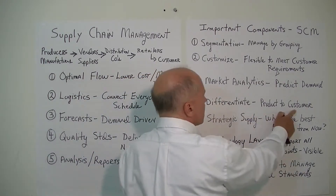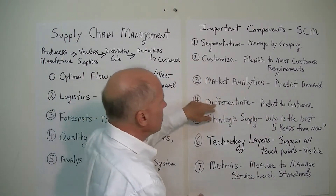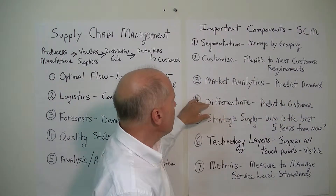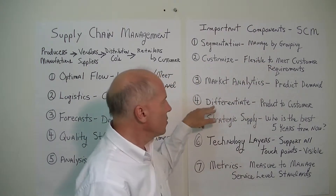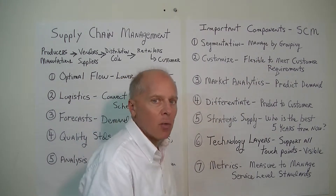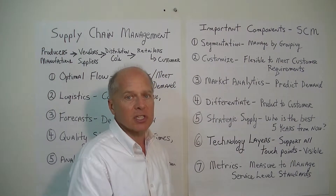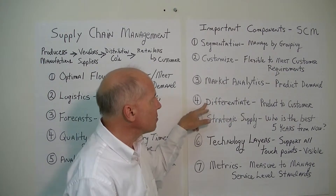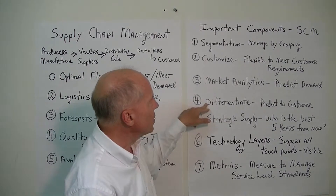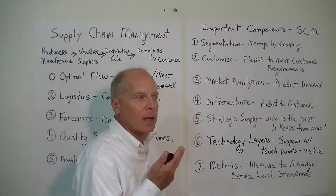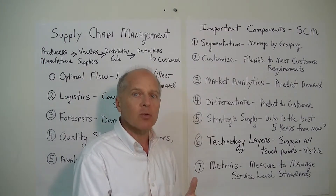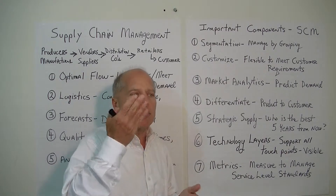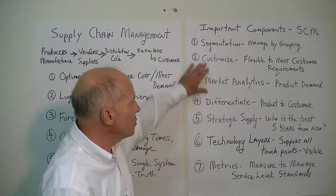Differentiate your products. This gets back to customization — if you have products that are customer-specific, that helps you meet customer demand and requirements. You don't want homogeneous products that are the same everywhere. If you have something unique to the customer, that will optimize and pull in demand. And if we pull in more demand, that will lower our cost — because higher volume reduces cost. That's what we're trying to do in the supply chain.